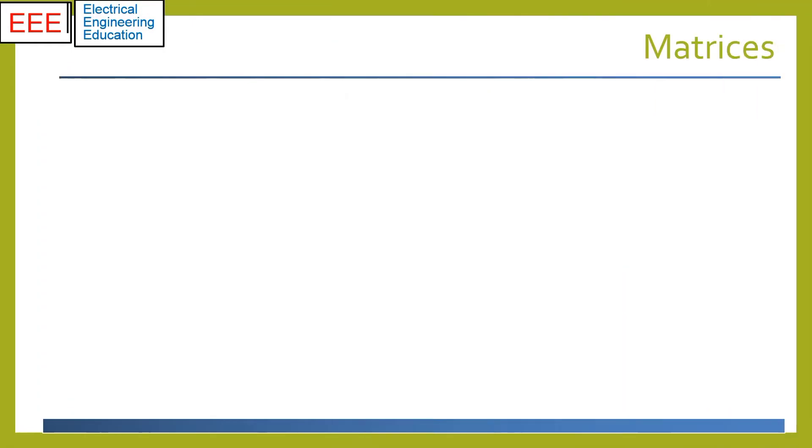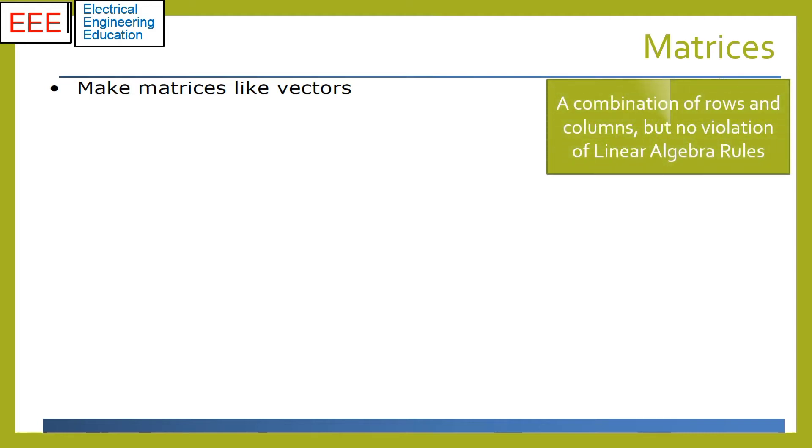A matrix is a two-dimensional array of numbers or a combination of rows and columns. In MATLAB, we create a matrix by entering elements in each row as comma or space delimited numbers and using semicolons to mark the end of each row. Please make sure not to violate linear algebra rules.